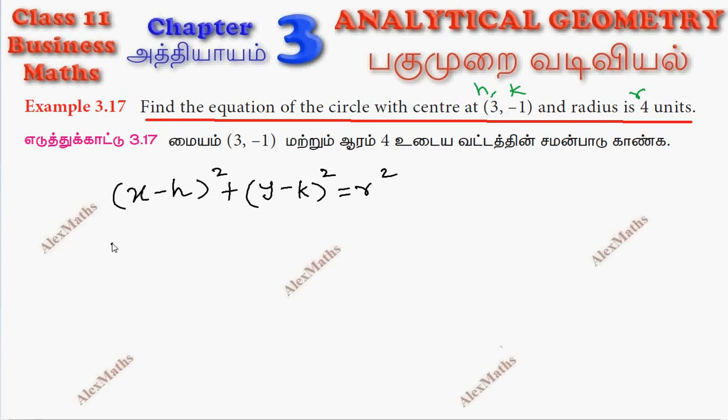So now this is direct substitution. Now this is (x - 3) whole square, (y + 1) whole square equal to 4 square.